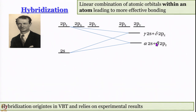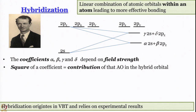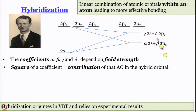The coefficients depend on field strength, and the square of a coefficient is the contribution of the atomic orbital to the hybrid orbital. In this orbital drawn as lower in energy, alpha-squared gives the s-contribution, beta-squared gives the relative contribution of 2pz. Similarly, gamma-squared gives the contribution of 2s and delta-squared gives the contribution of 2pz in the other hybrid orbital.